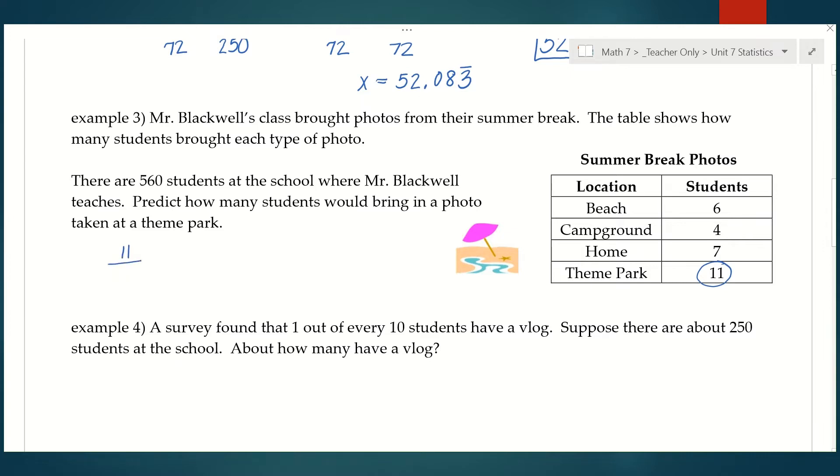We also need to know the total. That doesn't tell us anywhere. So we want to make sure we add these up. So 6 plus 4 is 10, 10 plus 7 is 17, 17 plus 11 gives me 28. So 11 out of 28 people brought in a picture from a theme park. And I am predicting how many out of 560 would bring in a theme park picture. Cross multiplying 28x equals 11 times 560, 6,160. We're going to divide by 28 and we are going to get 220 students.